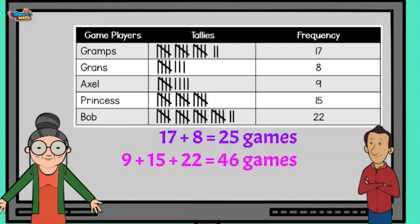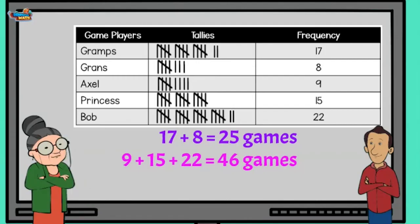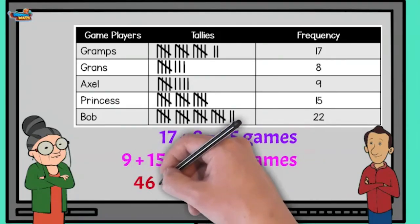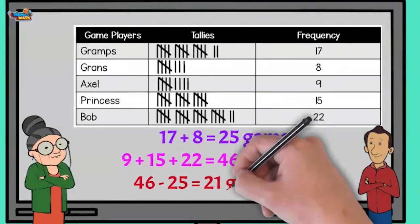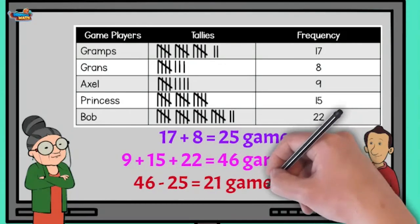So what's holding you back? Get subtracting. Right away, Gramps. 46 minus 25 equals 21 games. They almost had double the amount of wins as you and Gramps.